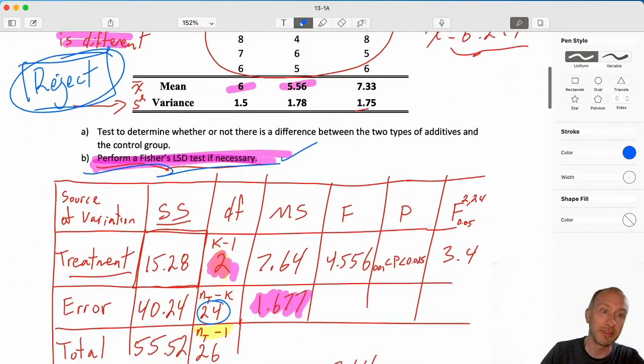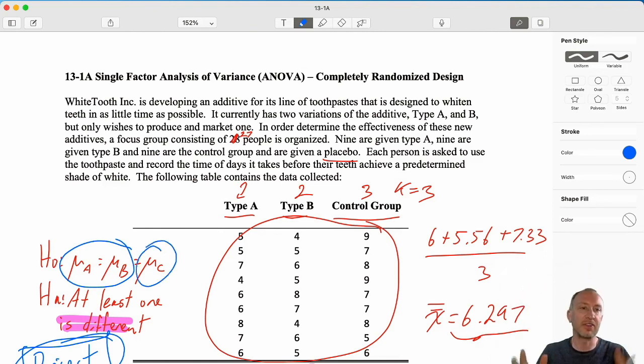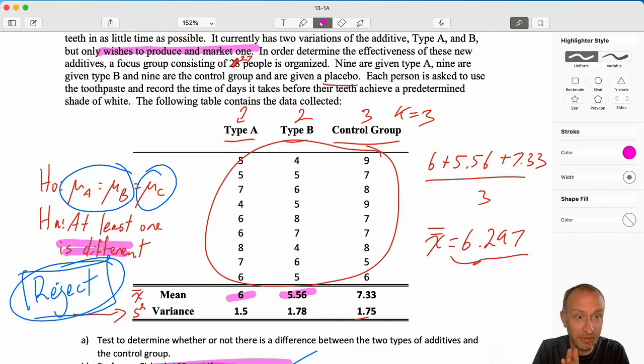So we've identified of our three different samples which one is different. Now coming back to the problem because we want to interpret this always in the context of the problem. We have reason to believe that these two are not statistically different from each other. But they are different from the control. Now if we go into our problem and we see that, well, they were trying to determine the effectiveness because they only wish to produce and market one of them. Well, what we found here is that there is a difference between these two tooth whiteners and the control group. But we don't know, we don't have any evidence to show that there's a difference between those two types. So it doesn't really help them answer their question other than to say, yes, your tooth whiteners are different than the control. But between your two whiteners, we have no way of knowing, we don't have any evidence to show that there's actually a difference between them.